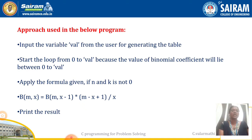What are the approaches used in this program? First, we give the input to the val variable, and the loop will start from 0 to value. The third step is to apply the formula for finding the binomial table. We apply the formula for n and k, where k should not be 0. The mathematical formula is: B(m, x) = B(m, x-1) * (m - x + 1) / x. This formula is applied in our program.